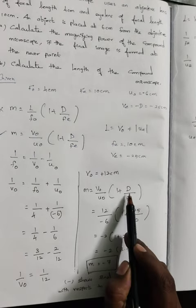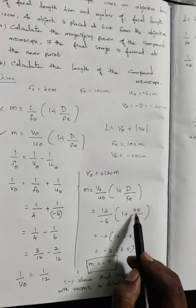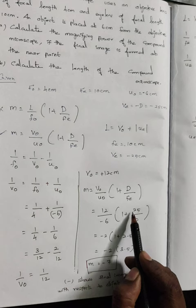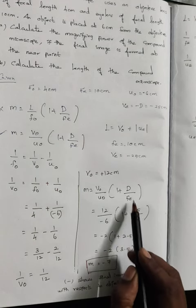People also confuse why we substitute D as 25 and not as minus 25. Whenever we substitute D, use 25, and whenever you substitute it as V, then use minus 25.